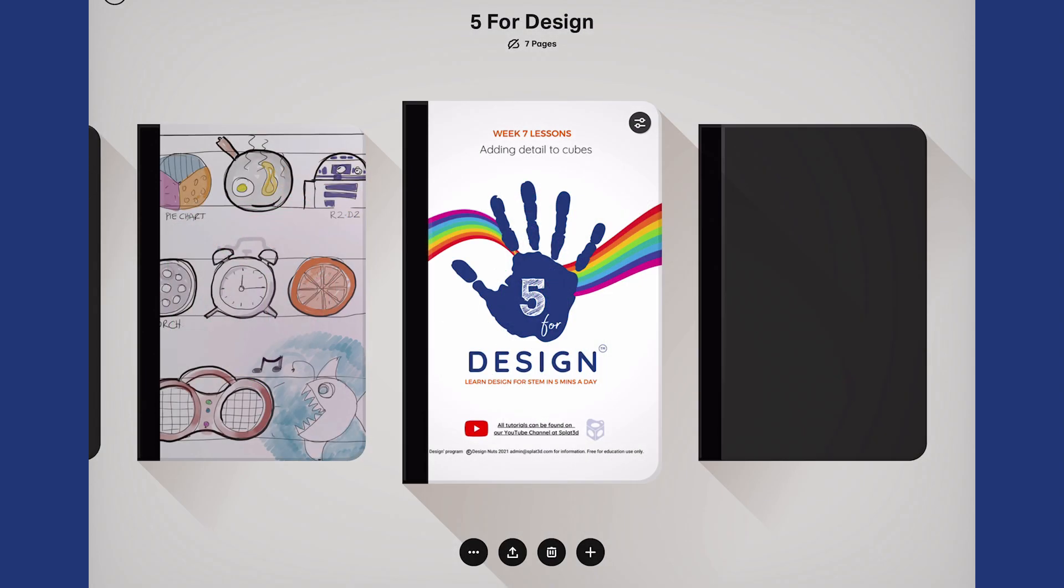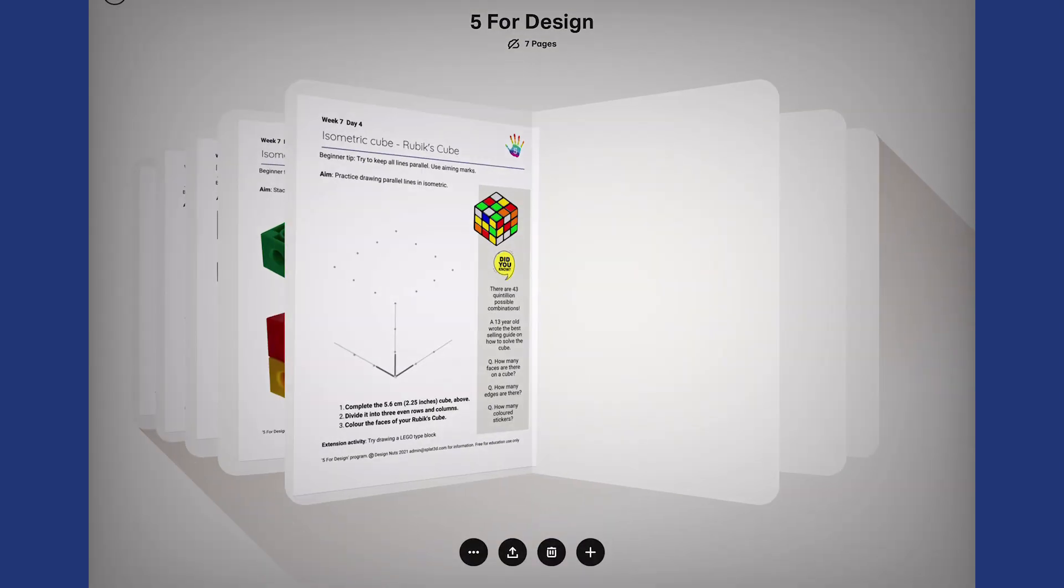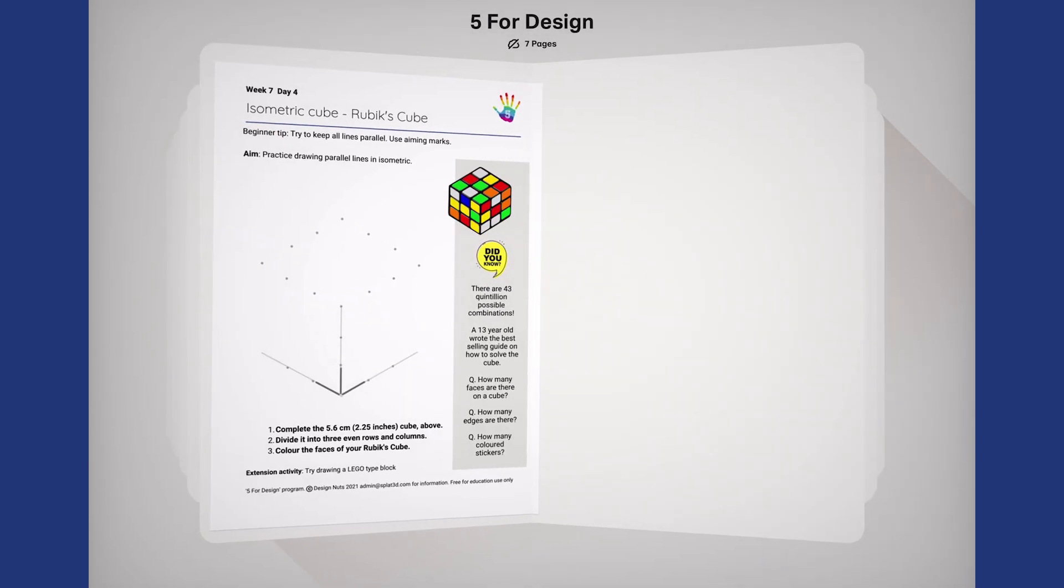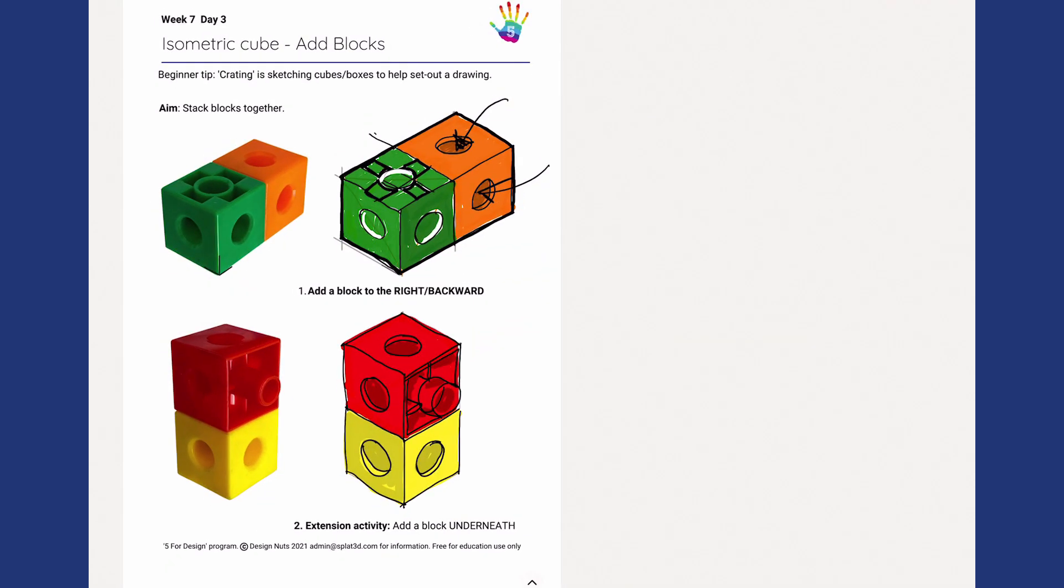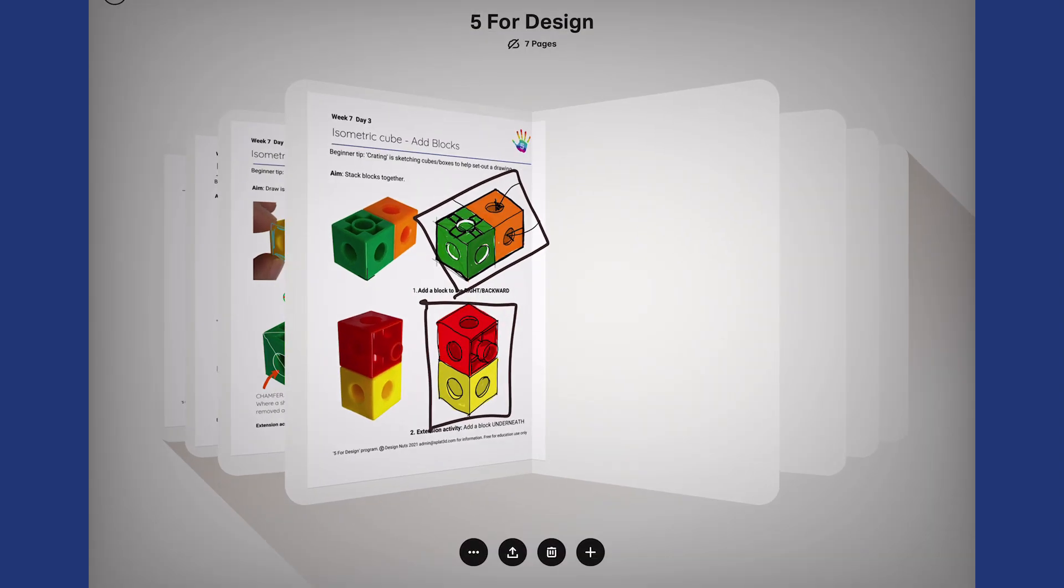Hi, we've made it to day 4 of week 7. I'm so proud of everyone's effort. We're learning lots together. Let's have a look at today's sheet. We're working on drawing a Rubik's cube to practice our parallel lines. Let's quickly look at last lesson. We learned to stack cubes one behind the other. And some people had a go at stacking up and down. Alright. Back to today's lesson.